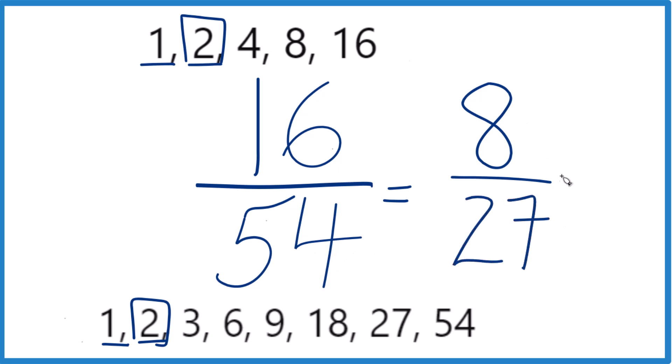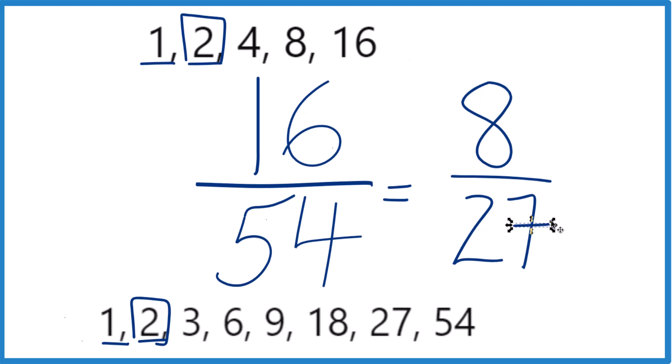And 8/27, we can't simplify this any further. It's in lowest terms. So when we simplify the fraction 16/54, we end up with 8/27. And these are equivalent fractions.